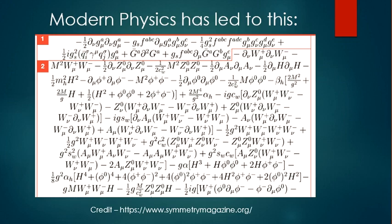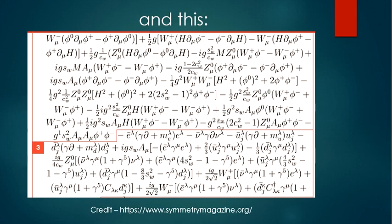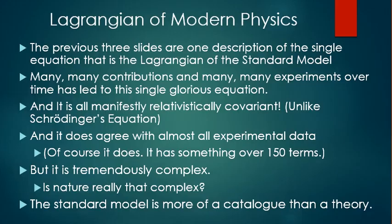And then we have the Lagrangian. Modern physics has led us to this, and this, and this. The previous three slides are one description of the single equation that is the Lagrangian of the standard model. Many, many contributions, and many, many experiments over time, has led to this single, glorious equation. And it is all relativistically covariant, unlike Schrödinger's equation. And it does agree with almost all experimental data. It has something over 150 terms, but it is tremendously complex. Is nature really that complex? The standard model is more of a catalog of our knowledge than it is a physical theory.